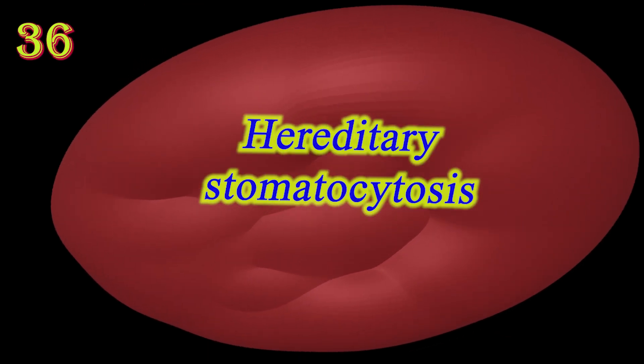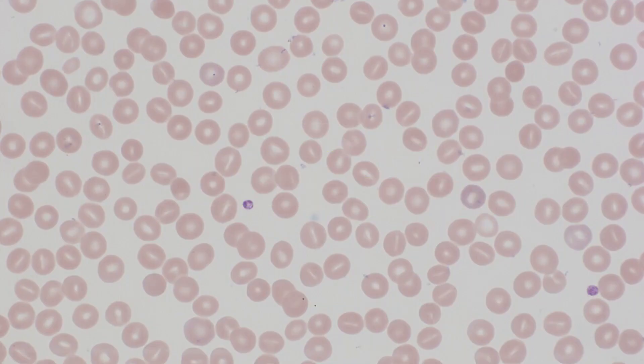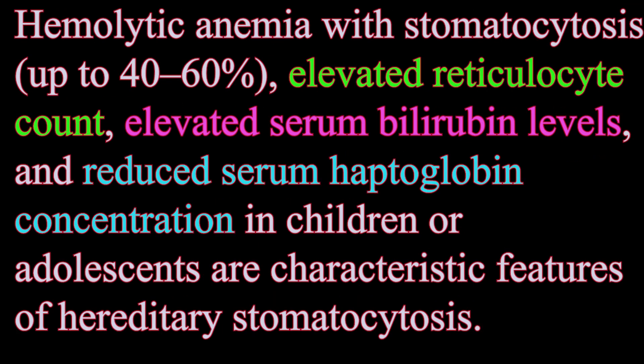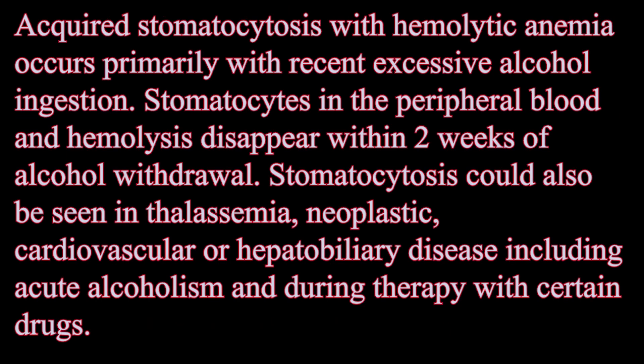Hereditary stomatocytosis describes a number of inherited, mostly autosomal dominant conditions that affect RBCs and create a slit-like area at the center among erythrocytes, seen as stomatocytes in the peripheral smear. The erythrocyte cell membranes may abnormally leak sodium and potassium ions, causing abnormalities in cell volume. Hereditary stomatocytosis can cause extravascular or intravascular hemolysis, leading to jaundice, splenomegaly, and gallstone formation.